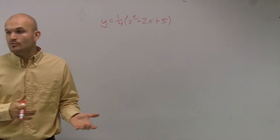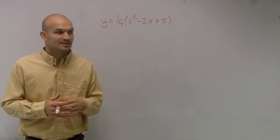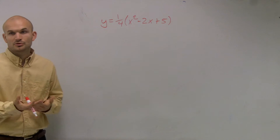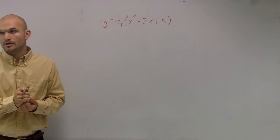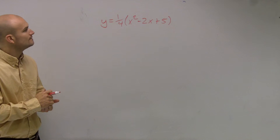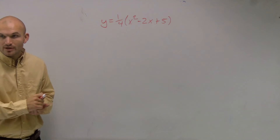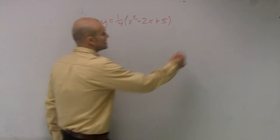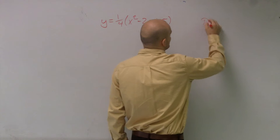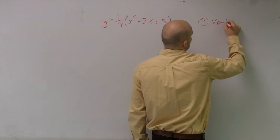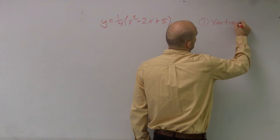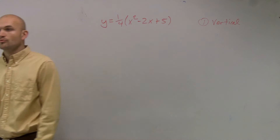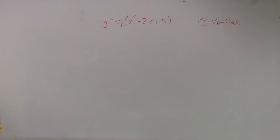If we have our y squared, we're going to have a horizontal parabola opening either left or right. When we look at this problem, we see which variable is going to be squared, which is x squared. So therefore, this is going to be a vertical axis of symmetry, a vertical parabola. It can open up or open down.